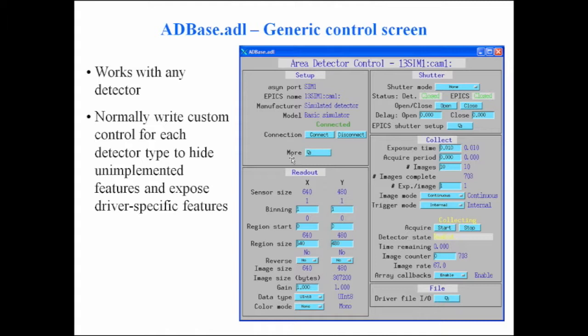Because we have this base class of parameters, we can write generic clients. There's a generic MEDM screen called ADBase.adl, and with this screen you should be able to control any camera. You won't be able to control all the features of any camera, but you could probably make any camera basically work with this screen. Most of the time you wouldn't use it though, since it may display irrelevant parameters and won't display detector-specific unique parameters.